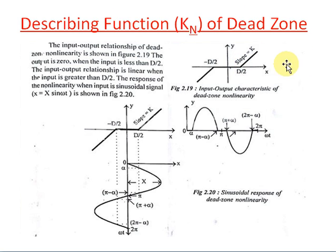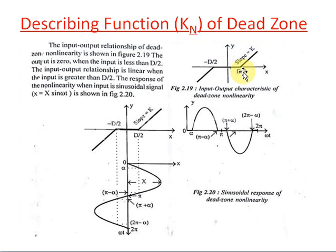Consider this figure. In the case of dead zone, the output is 0 for a particular range of input. Up to a particular value of input, the output is 0, and after that the output is linear. This figure shows the input-output relation of a dead zone non-linearity. The output is 0 up to the value d/2, and after that the output is linear. Here x is the input and y is the output. From d/2 to minus d/2, the output is 0, and after that the output is linear. At this linear region, the slope is equal to k.